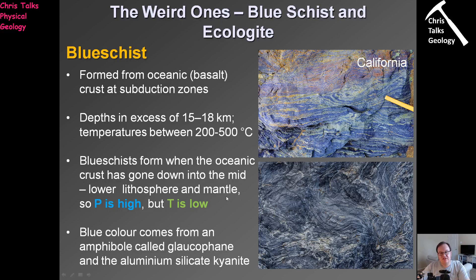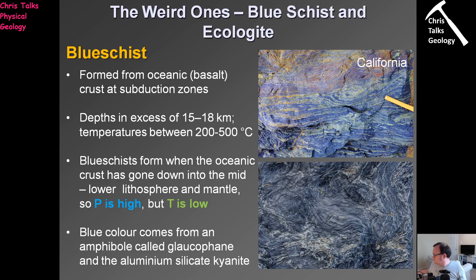Conditions are high pressure but the temperature is still quite low. The blue colour comes from a couple of minerals. The first is glaucophane, which is an amphibole — long, slender crystals that you can make align. The second mineral is kyanite, which forms bladed crystals — not very thick, but slender and long, like a ruler. You can make those crystals align and orientate themselves parallel to each other. So blueschists will have a foliation — it is a foliated rock typically containing glaucophane and kyanite.